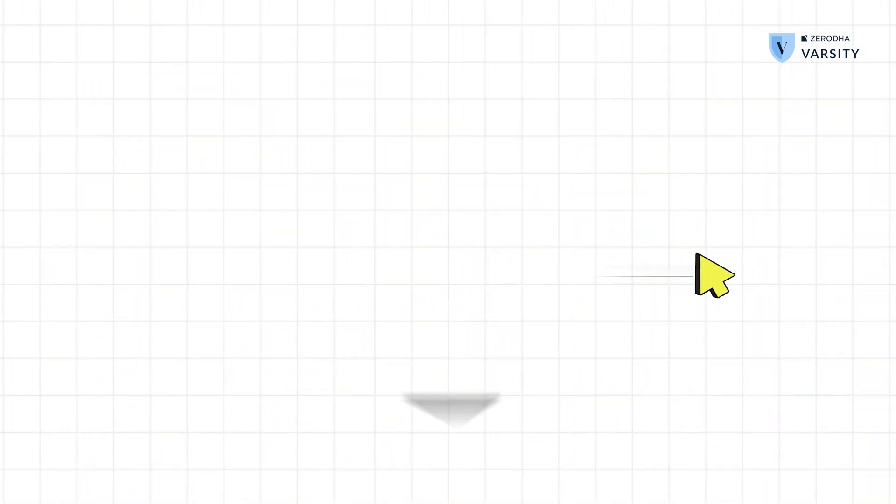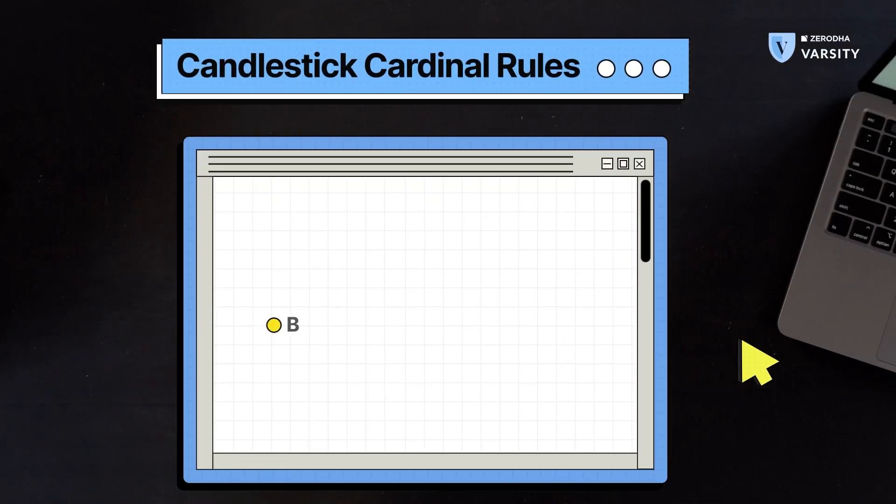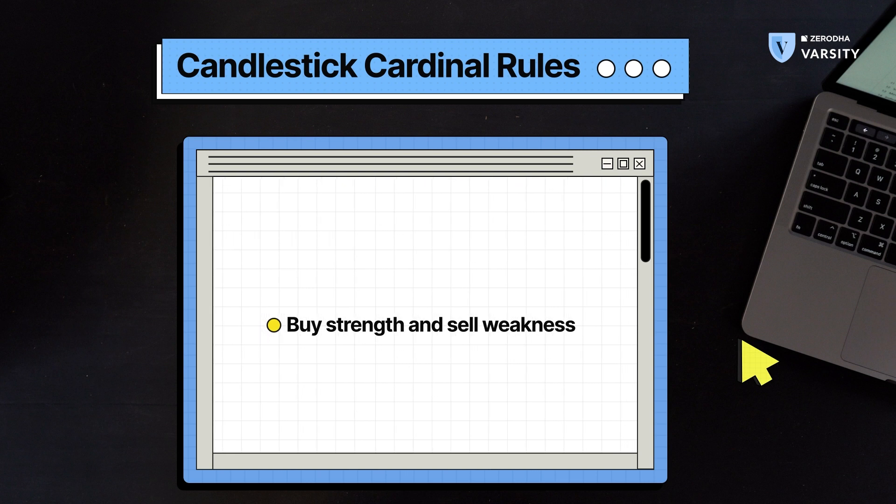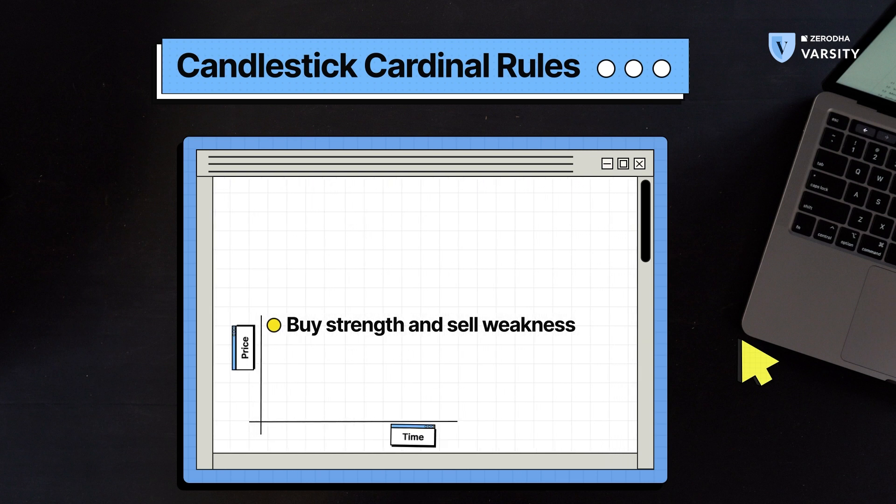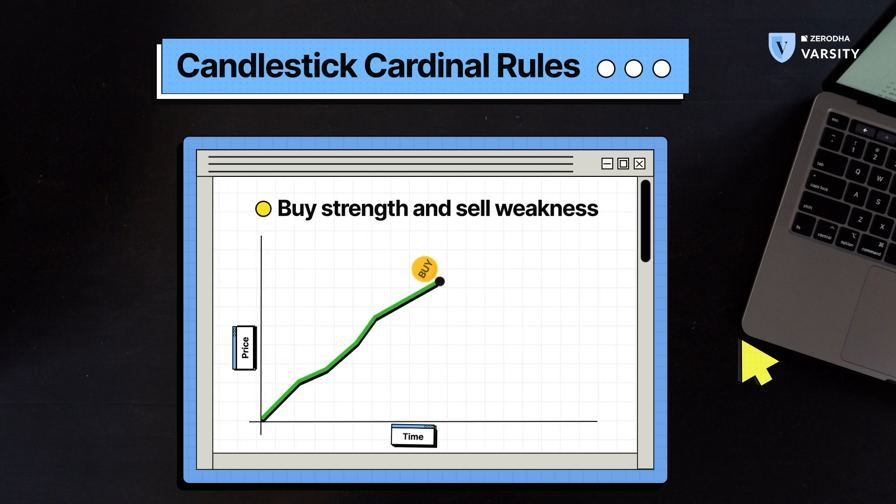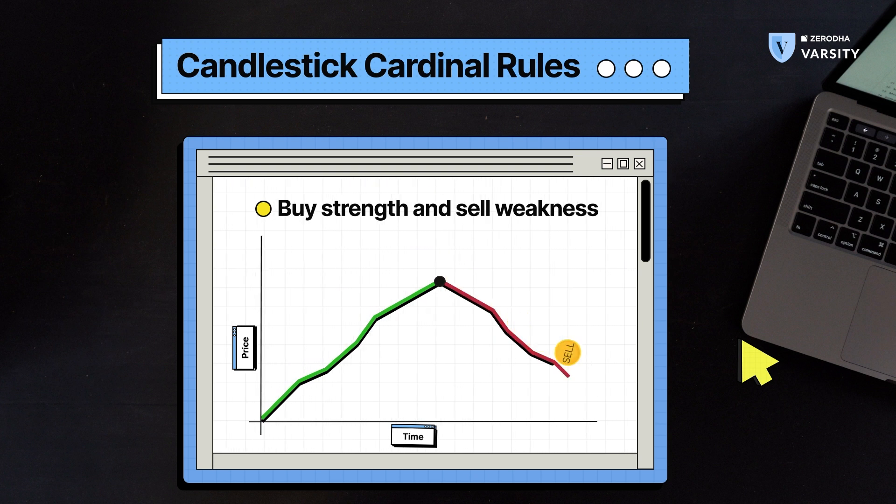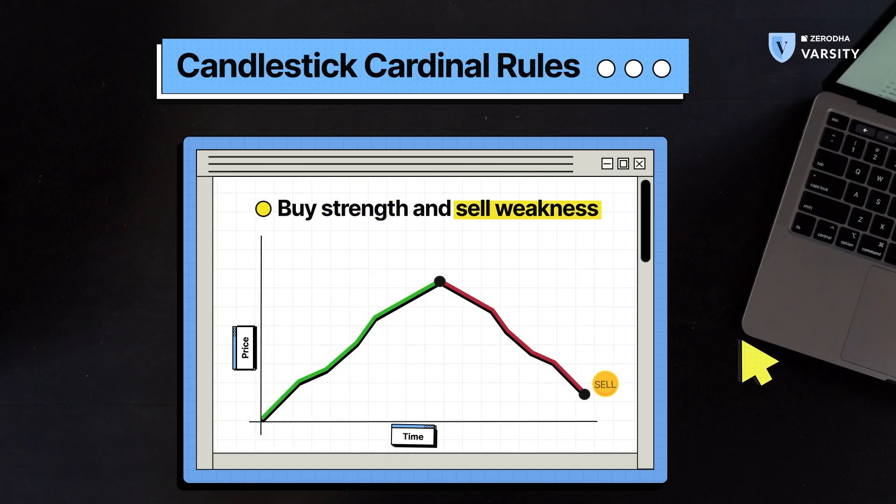There are also a few candlestick cardinal rules and we'll talk about them, three of them to be exact. The first one is buy strength and sell weakness, which generally means that if you're looking at trends, you must buy uptrends and sell downtrends. And if you're looking at a single candlestick, buy a bullish candlestick and sell a bearish candlestick. So buy strength and sell weakness.